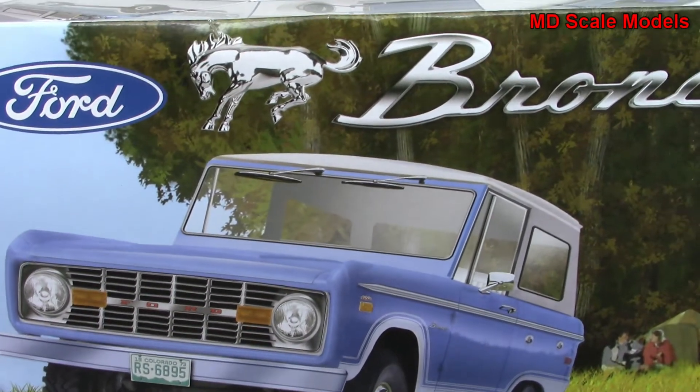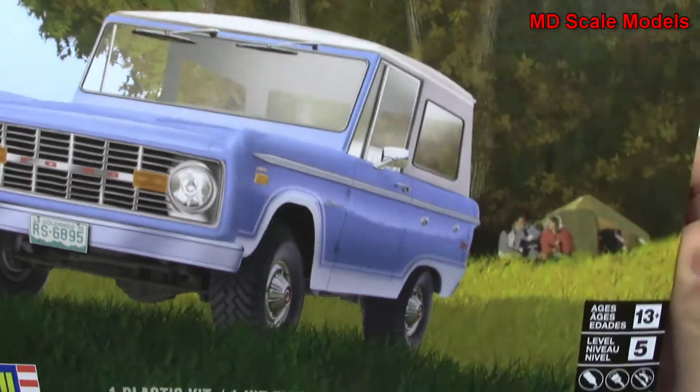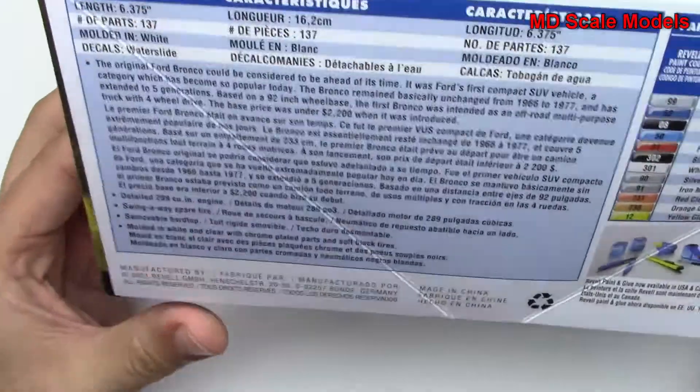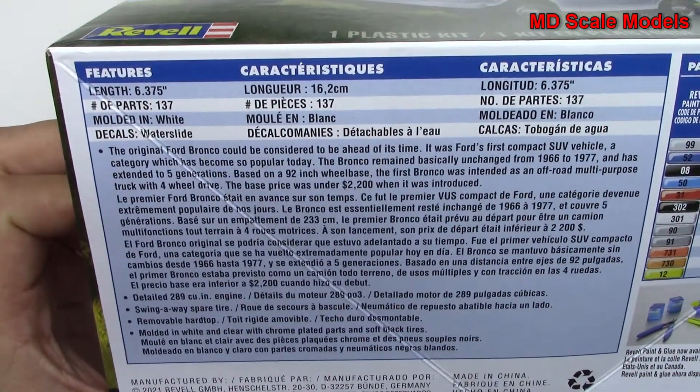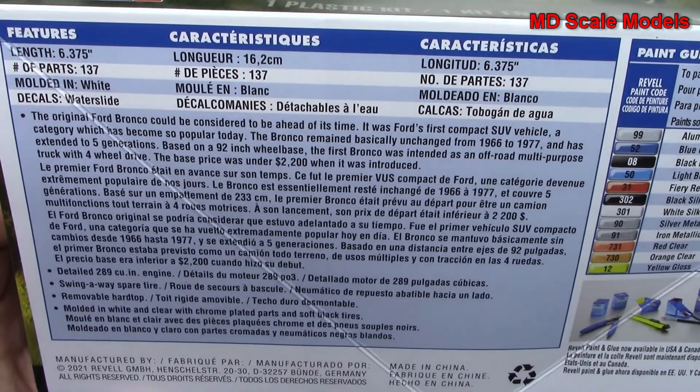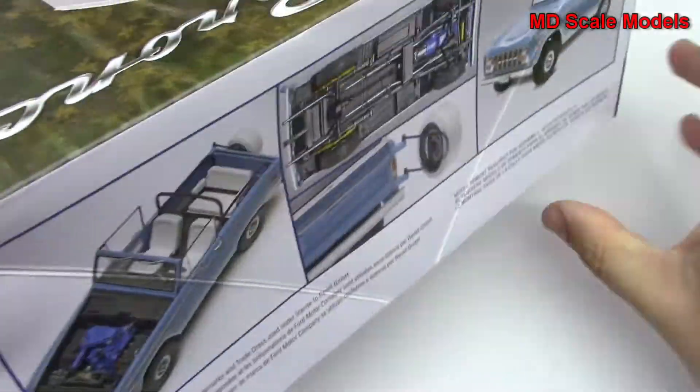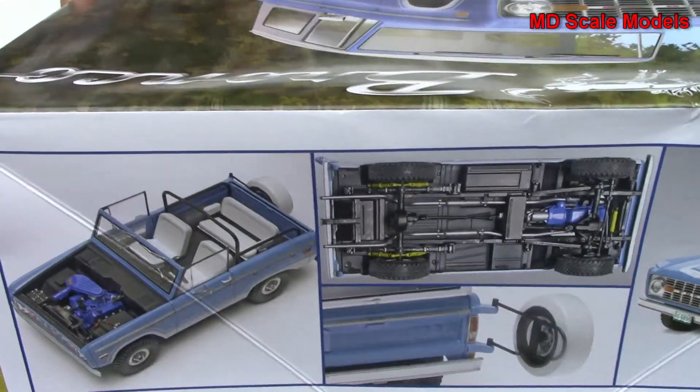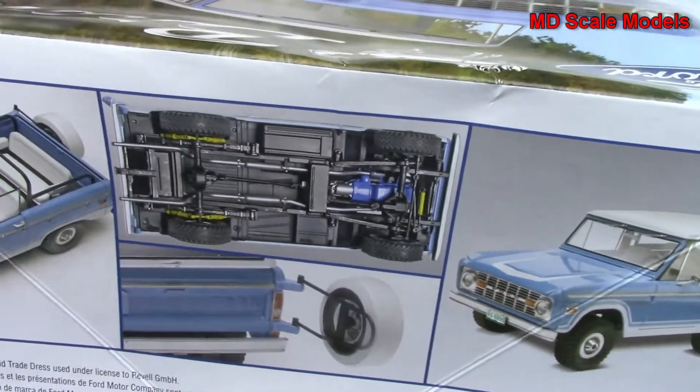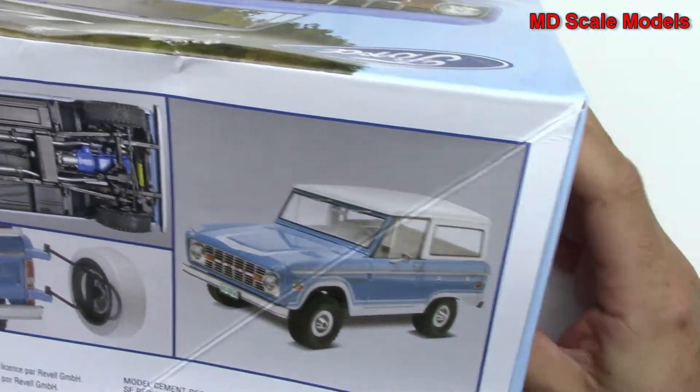This model kit review is of the Ford Bronco, a 1:25 scale model by Revell. Here are the dimensions and some details about the car. Here are some pictures of the finished model and it looks like we have some nice engine detail there.